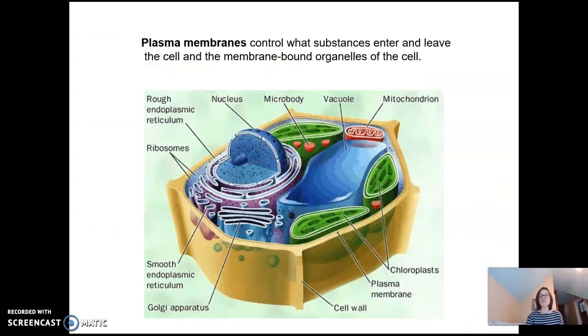So plasma membranes control what substances enter and leave the cell and the membrane-bound organelles of the cell. So there are membranes around all these organelles. The nucleus is enclosed in a membrane that's very similar in structure to the plasma membrane. The chloroplast has membranes to it. The central vacuole is all enclosed in a phospholipid membrane. So that membrane is found throughout the cell and helps to regulate transportation of substances. We call it semi-permeable meaning it lets some things through and doesn't allow other things through.